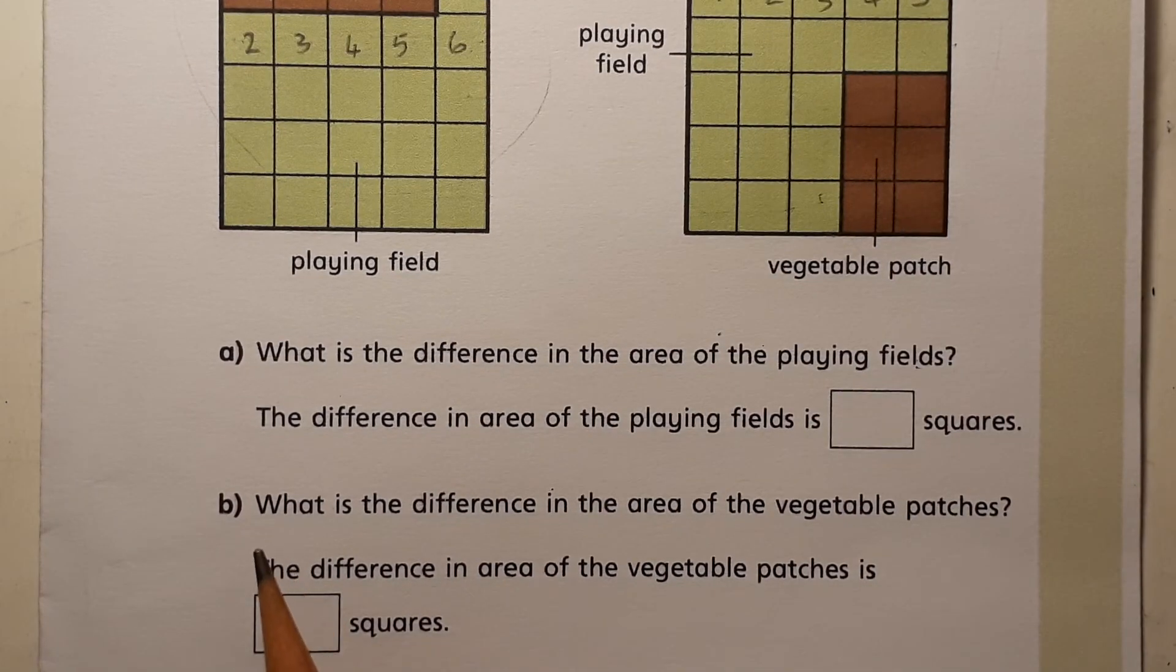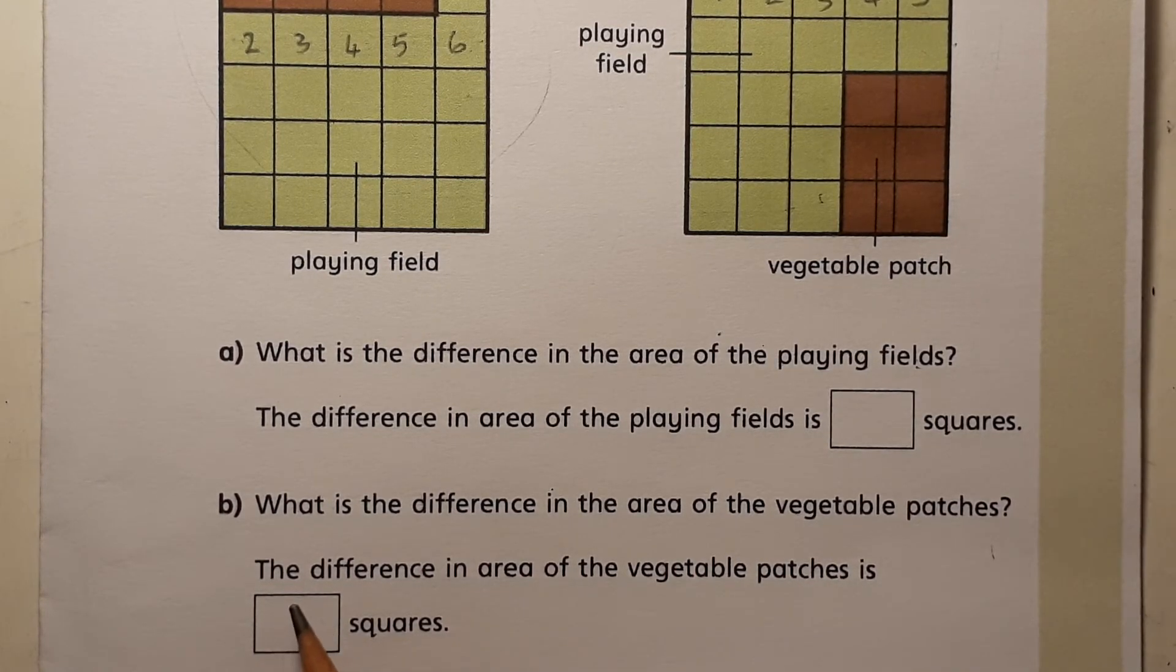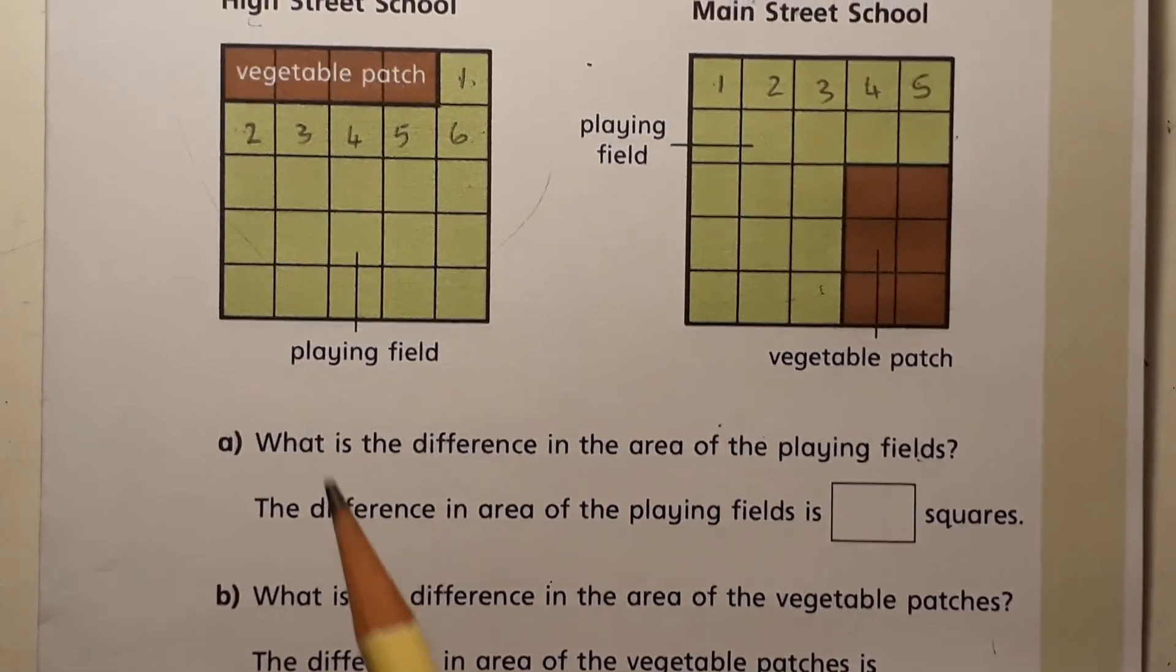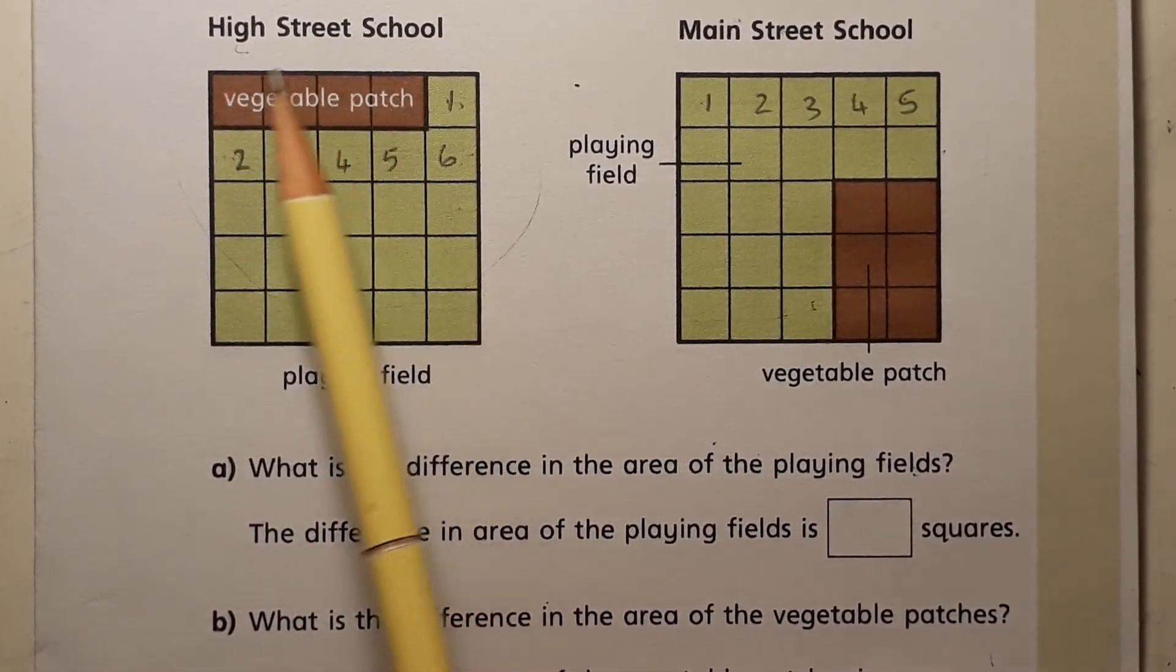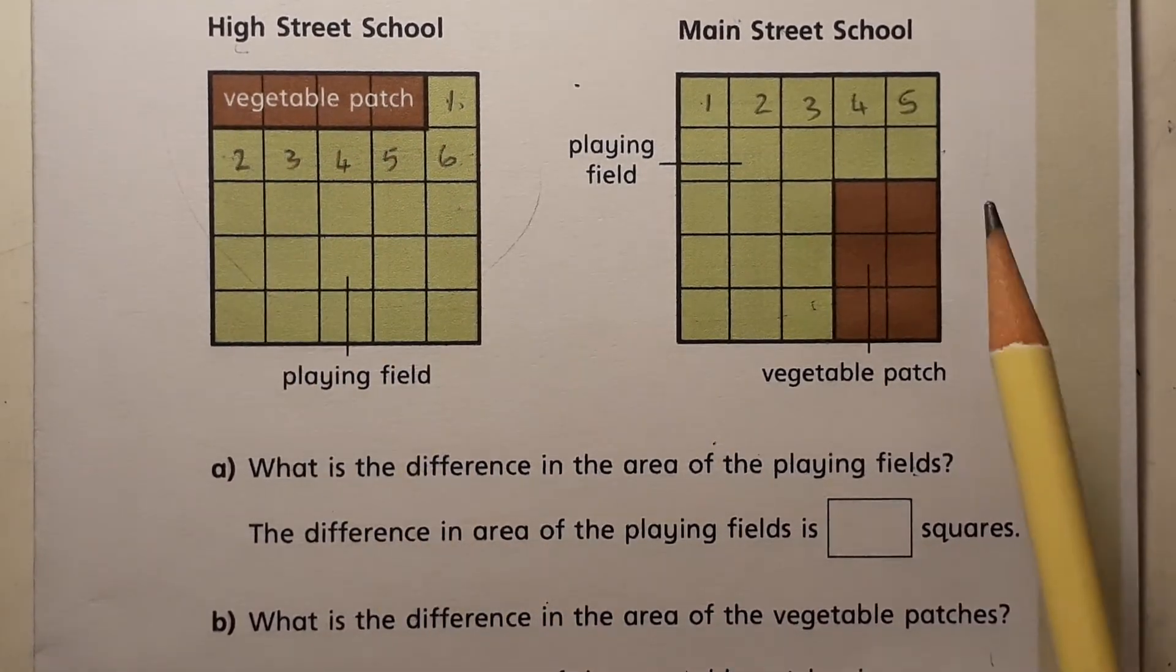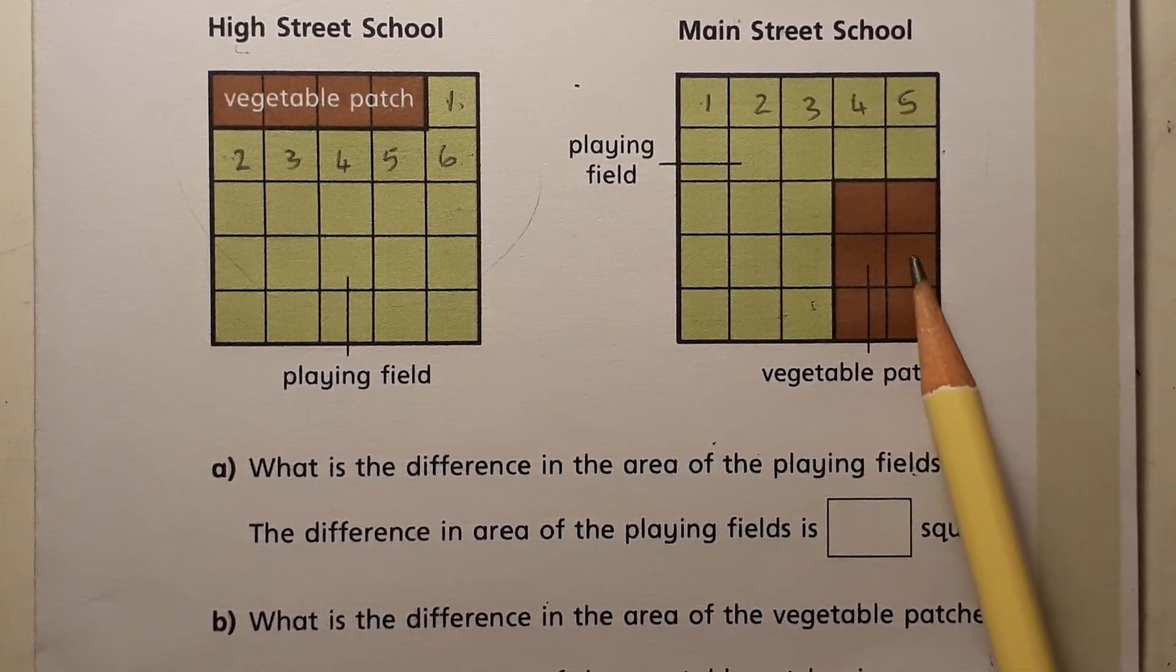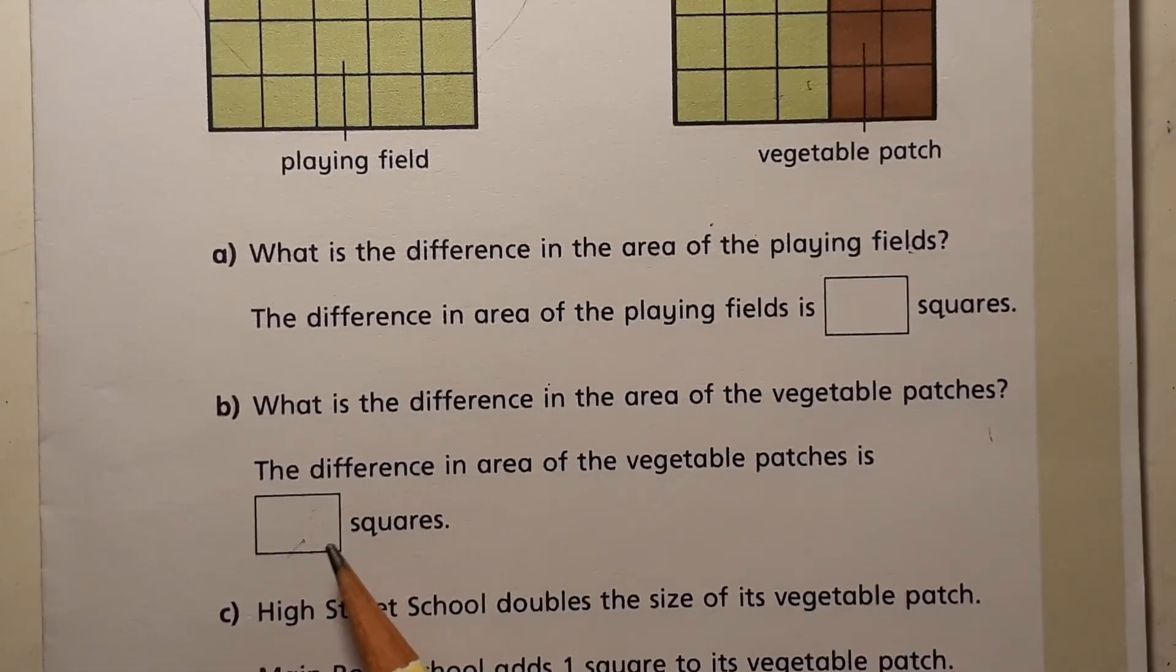Then have the question, what is the difference in the area of the vegetable patches? So the difference in the area of the vegetable patches is how many squares. So we need to compare how many squares this vegetable patch is and how many squares this vegetable patch is and write down the value of the difference.